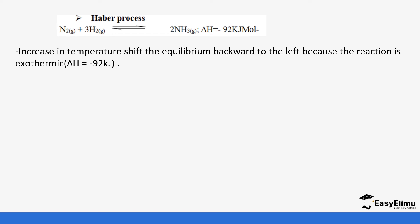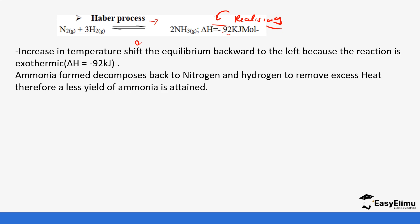Temperature is another factor that affects equilibrium in the Haber process. This reaction is exothermic — it releases heat into the environment. Adding more heat means putting in excess heat that the system needs to remove. So this reaction is favored by reducing the temperature; reducing temperature shifts the equilibrium to the right to replace the heat being removed. Conversely, increasing temperature shifts the equilibrium backwards to the left, causing ammonia to decompose back to nitrogen and hydrogen to remove excess heat — giving a lower yield.